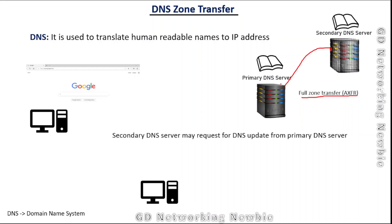Another possibility is that instead of sending the whole record, the primary DNS server only sends the updated information. In that case, this is known as an incremental zone transfer, where only a portion of the record is sent from the primary DNS server to the secondary DNS server. This means DNS servers need to exchange this information.